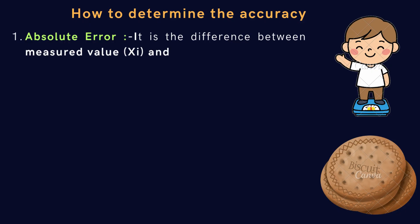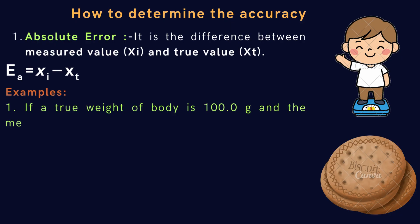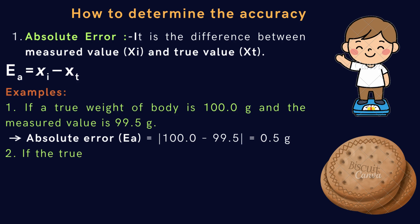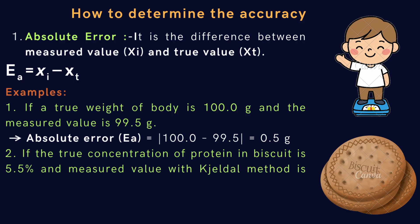Let's start with absolute error. It is the difference between the measured value xi and the true value xt. The formula is EA equals the absolute value of xi minus xt. Let's understand with examples. Example 1: If the true weight of a body is 100 grams and the measured value is 99.5 grams, then the absolute error is the difference between 100 and 99.5, which equals 0.5 grams. Example 2: If the true concentration of protein in a biscuit is 5.5% and the measured value using the Kjeldahl method is 5.2%, then the absolute error equals the difference between 5.5 and 5.2, that is 0.3%. In summary, absolute error tells us how close our measured result is to the true value, helping us evaluate the accuracy of our analysis.